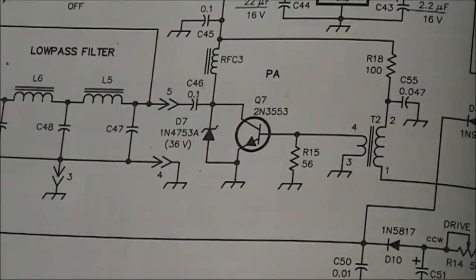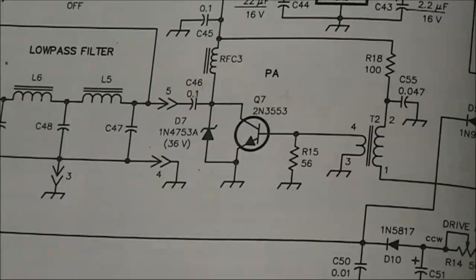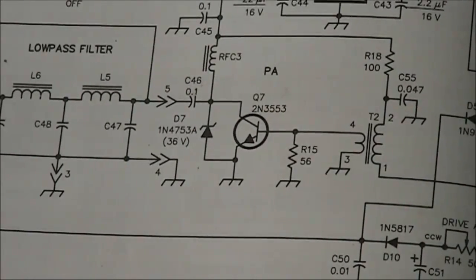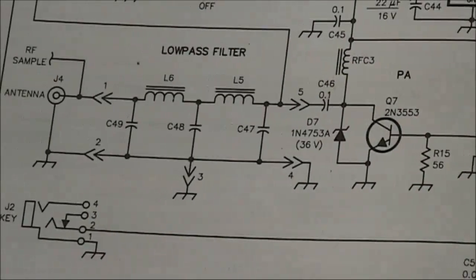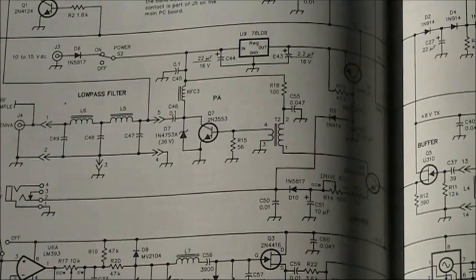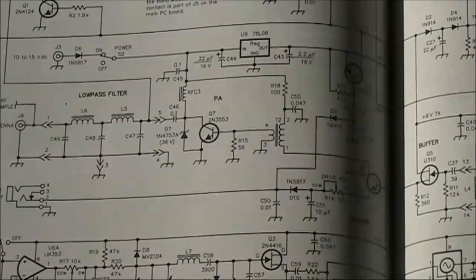They used a 2N3553, but that particular transistor is very good, but not particularly easy or cheap to get. Then there's the low pass filter and the antenna connection. I've made quite a few changes, which I'll now show in this diagram.